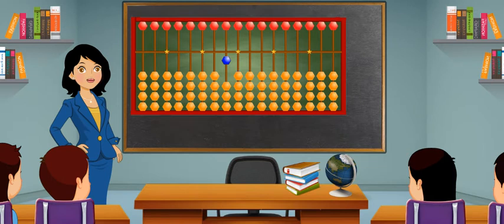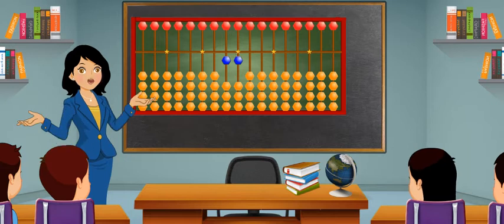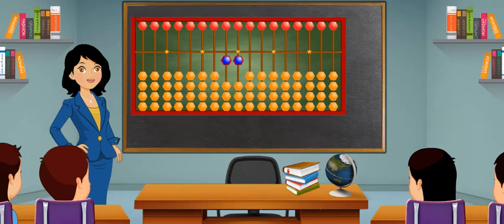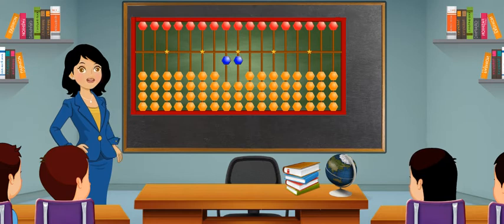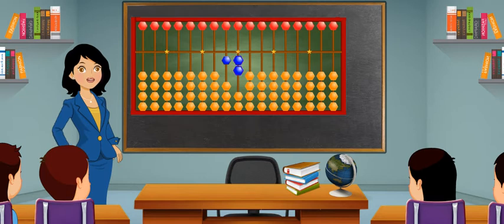one earthen bead of the ones place as well as one of the tens place touch the skyline. This is number 11. To show number 12, one earthen bead on the tens place will remain the same and bring one more earthen bead up on the ones place to show two. This is number 12.